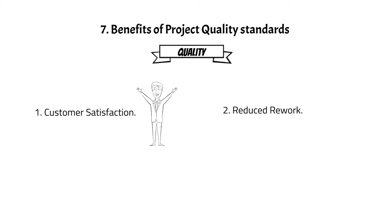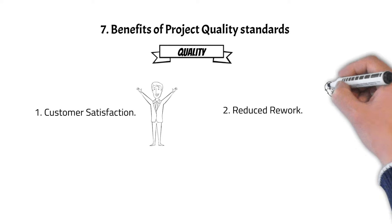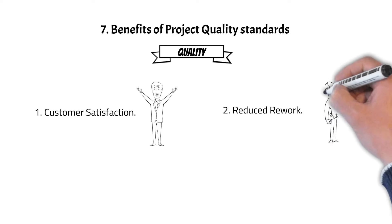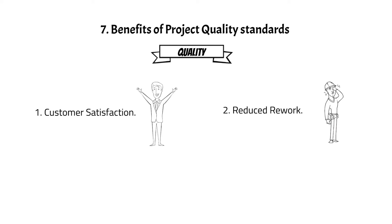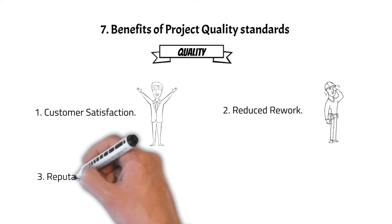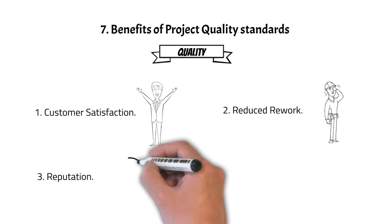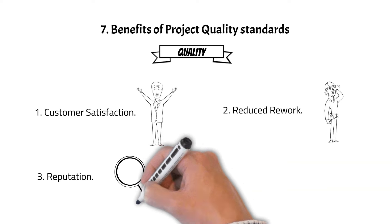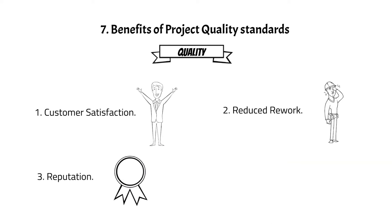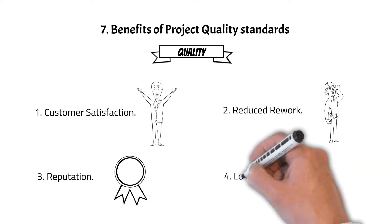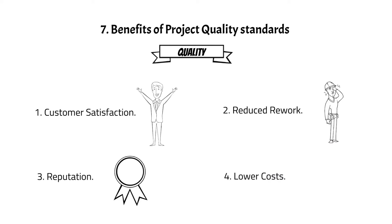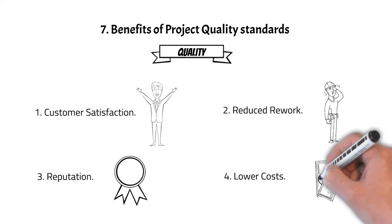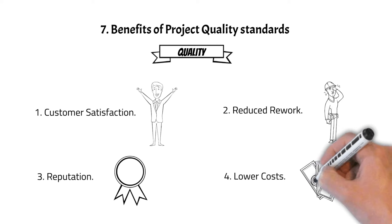Second, reduced rework — quality reduces the likelihood of errors and rework, which not only saves time but also conserves resources. Third, reputation — consistently delivering quality projects builds a strong reputation for your team and organization; it's a mark of trustworthiness and reliability. Fourth, lower costs — quality control can lead to cost savings by avoiding defects and inefficiencies, as prevention is often more cost-effective than correction.